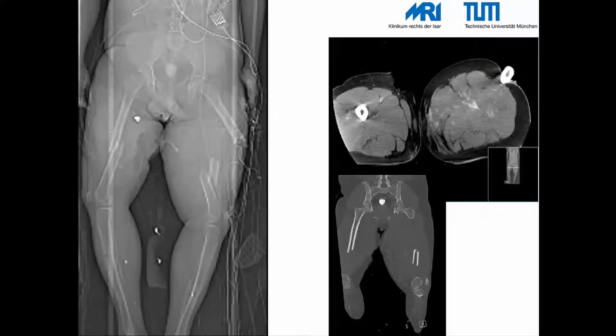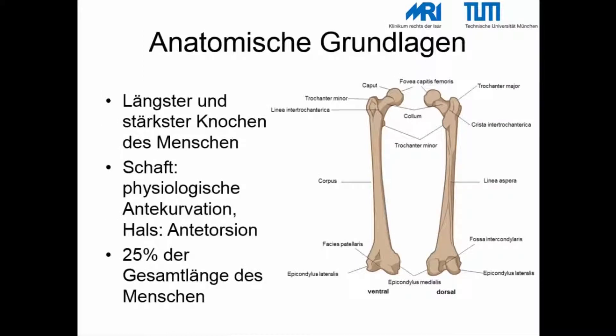Diese Computertomografien zeigen beispielhaft ausgedehnte Femurfrakturen auf beiden Seiten. Zum besseren Verständnis von Femurschaftfrakturen ist es hilfreich, sich die anatomischen Grundlagen zu vergegenwärtigen.